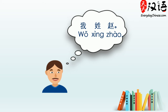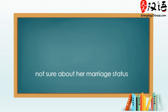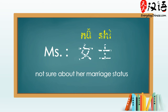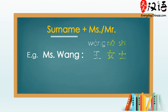Now you know how to ask for a person's surname. To address a female, if you are not sure about her marriage status, you can address her as Miss. The Chinese word for Miss is 女士. Take note — different from English, the Chinese surname goes before Miss or Mr. For example, to say Miss Wang, we say 王女士.